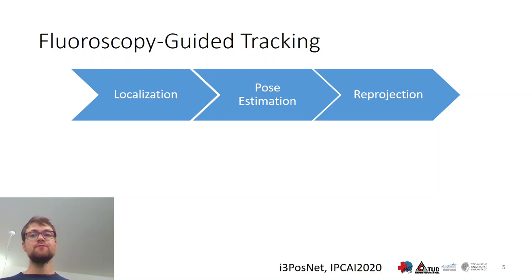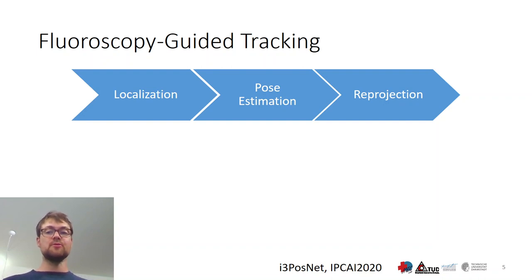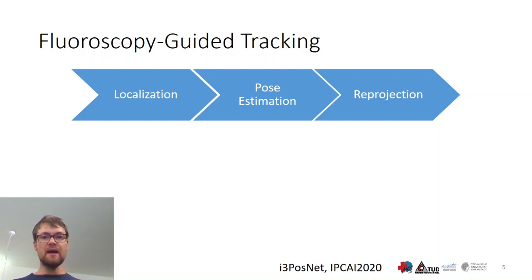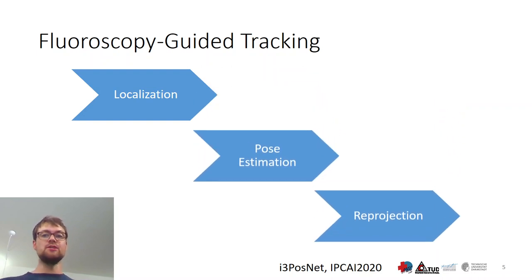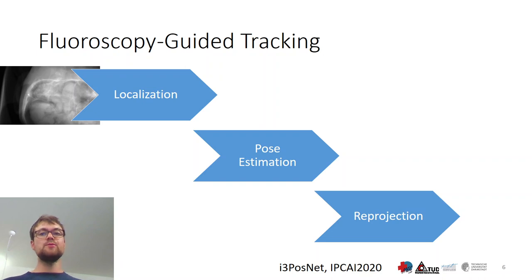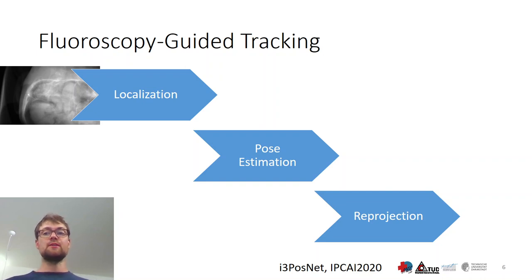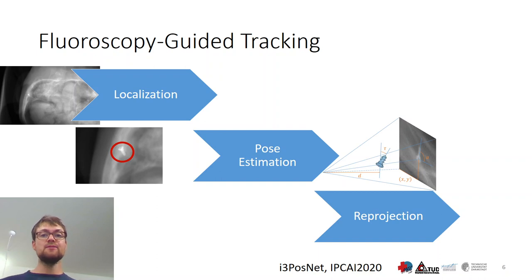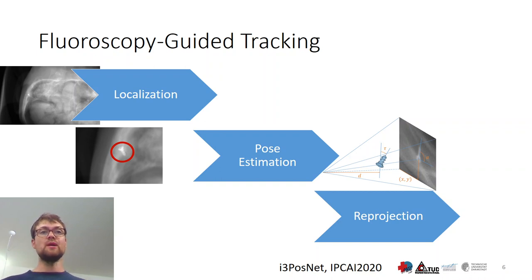Transitioning to the method, we envision fluoroscopy-guided tracking in three steps: first, a localization step; second, a pose estimation step; and finally, the reprojection, where the pose is projected back into the patient coordinate system. In the localization step, we use the full resolution to generate a first pose estimate — multiple learning-based solutions are already published for this kind of task. Based on this initial pose estimate, we then estimate the five-dimensional pose, ignoring rho because of rotational symmetry.